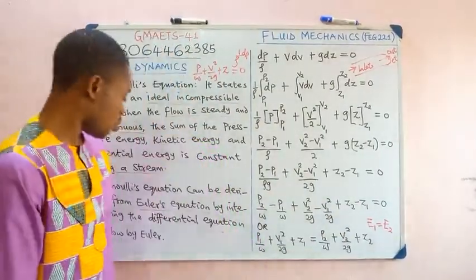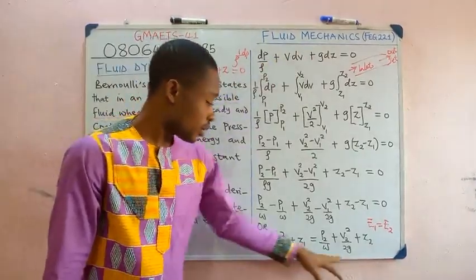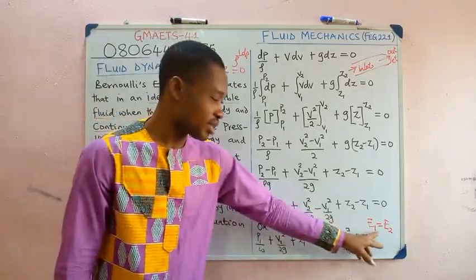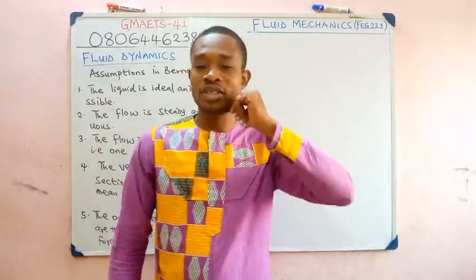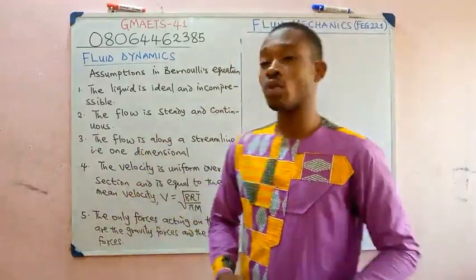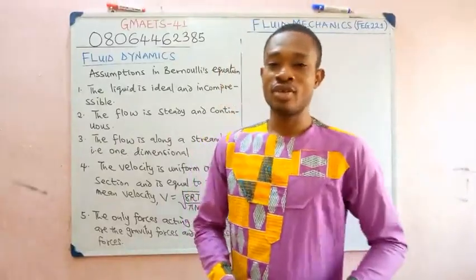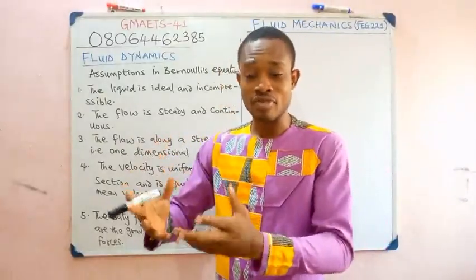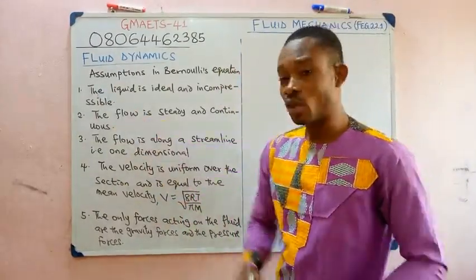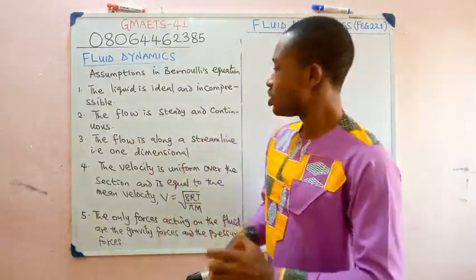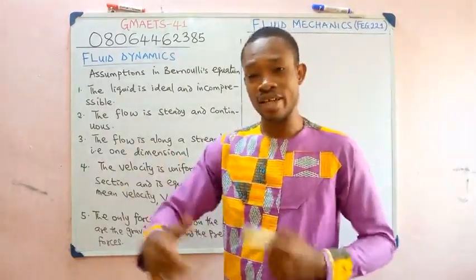Certain assumptions were made in obtaining Bernoulli's equation. Assumption one: the liquid must be ideal and incompressible. Assumption two: the flow should be steady and continuous.